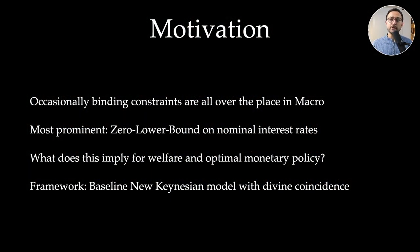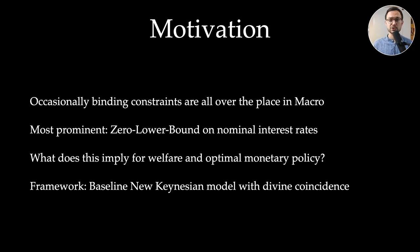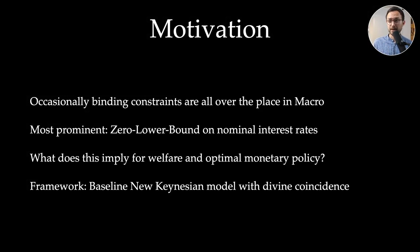In many macroeconomic models we need to deal with occasionally binding constraints. For example, a positivity constraint on investment — so-called irreversible investments — or an upper bound on hours worked, or borrowing constraints for households, firms, or banks in models with financial frictions. In all these models we need to deal with those occasionally binding constraints. Maybe the most prominent one in recent decades has been the zero lower bound on nominal interest rates, and there is a huge literature tackling this from many perspectives, not only theoretically but also empirically.